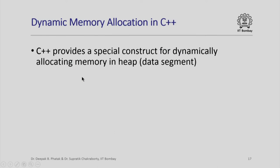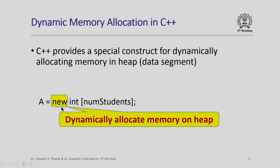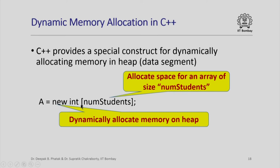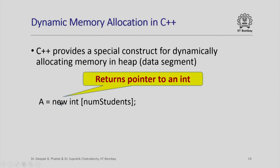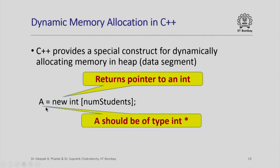So how do we do that in C++? C++ actually provides a special construct for dynamically allocating memory in the heap, also called the data segment. Here I am going to use this special construct called new, which basically tells the computer to dynamically allocate memory on the heap. By using square brackets and putting numstudents in between, I am saying: allocate space for an array of size numstudents where each element in that array is going to be an integer. This construct is actually going to return a pointer to an integer. Therefore, the type of A — which is what I am assigning the return value to — should be int star.